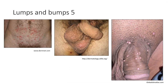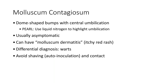Lumps and bumps number five: red bumps on the lower abdomen, light-colored dome-shaped bumps on the scrotum and penis — this is molluscum contagiosum, a common viral STD (also non-STD particularly in kids). In adults in these areas it's generally sexually transmitted. You see dome-shaped bumps with central umbilication. A pearl is to use liquid nitrogen to highlight that umbilication, which helps differentiate molluscum from genital warts.